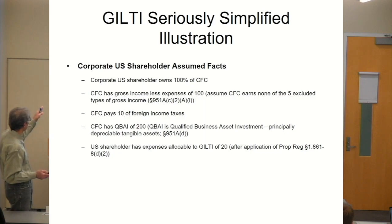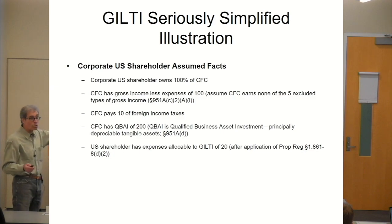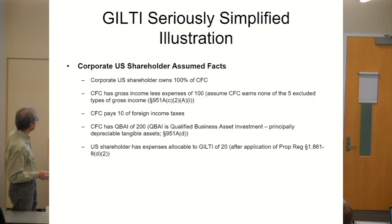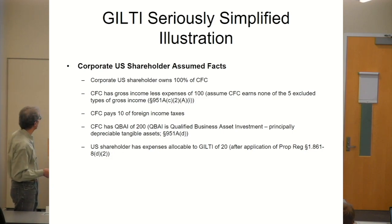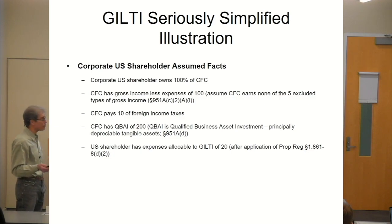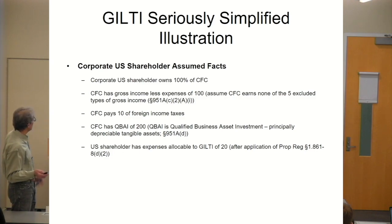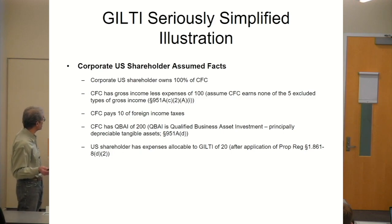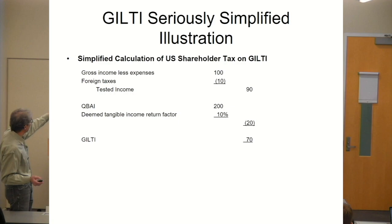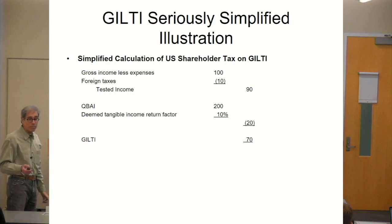Here's an example: assumed facts — a corporate U.S. shareholder owns 100%. Gross income less expenses of 100. We're assuming it has no subpart F income, so there's no subtraction for subpart F income or several other categories found in Section 951A. The CFC pays 10 in foreign income taxes, the CFC has QBAI — qualified business asset investment — of 200. And notice: the U.S. shareholder has expenses allocable to GILTI of 20.